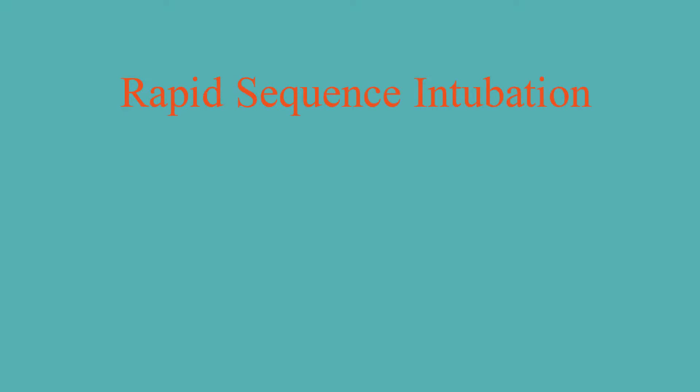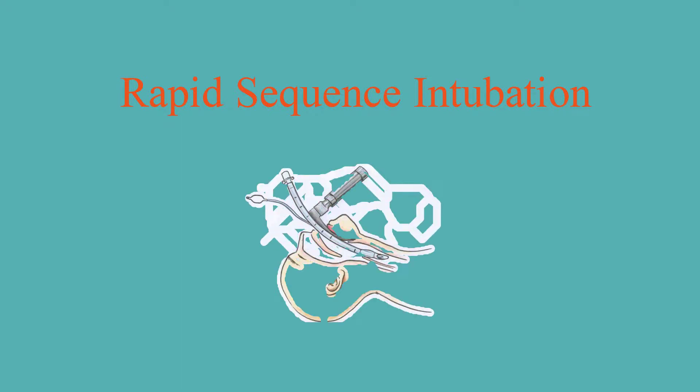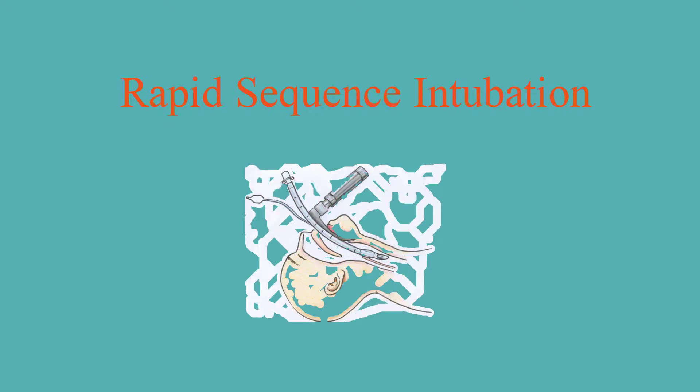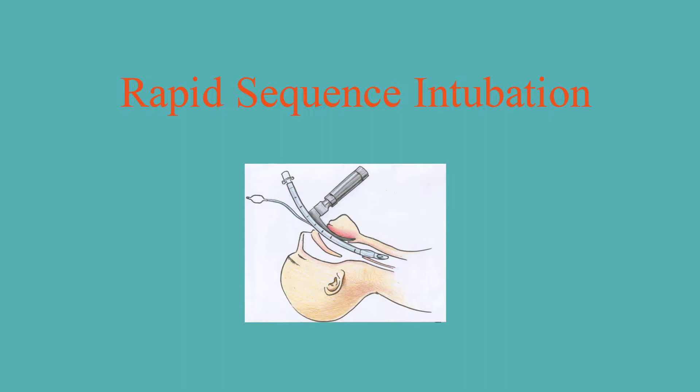In this video, we will learn how to do rapid sequence intubation, where we induce unconsciousness and paralysis in an acutely unstable patient to facilitate tracheal intubation with low risk of aspiration.